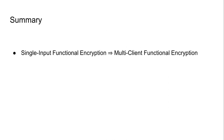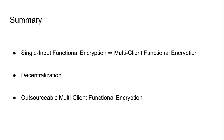In summary, we first showed how to obtain a multi-client functional encryption scheme for separable functions from a secret key single-input functional encryption scheme using a non-interactive secret sharing scheme. Additionally, we showed how our construction can be decentralized by removing the trusted party for setup and key generation. We also introduced the notion of outsourcable multi-client functional encryption that allows distributed execution of the decryption procedure, and showed how our construction can be modified to achieve outsourcability.